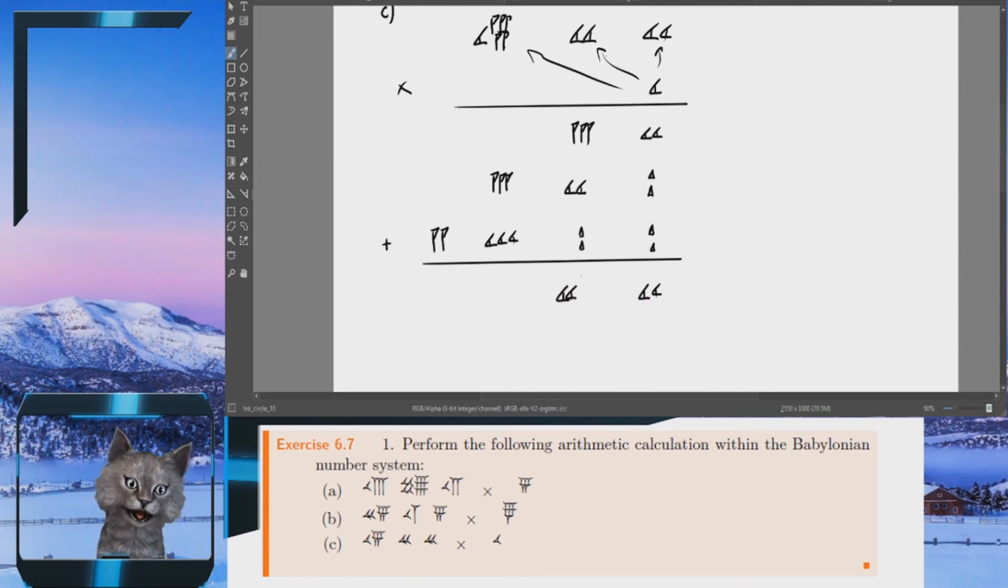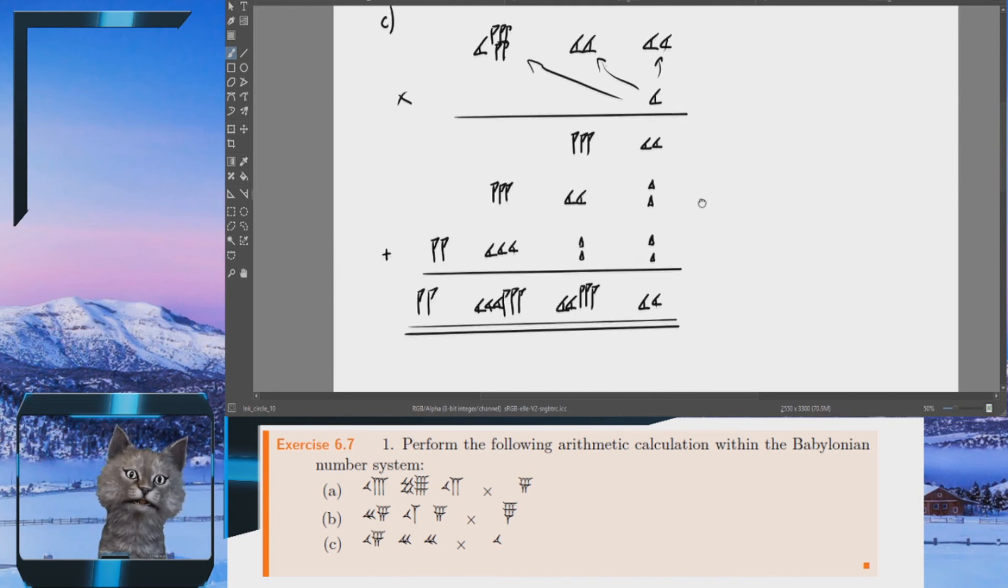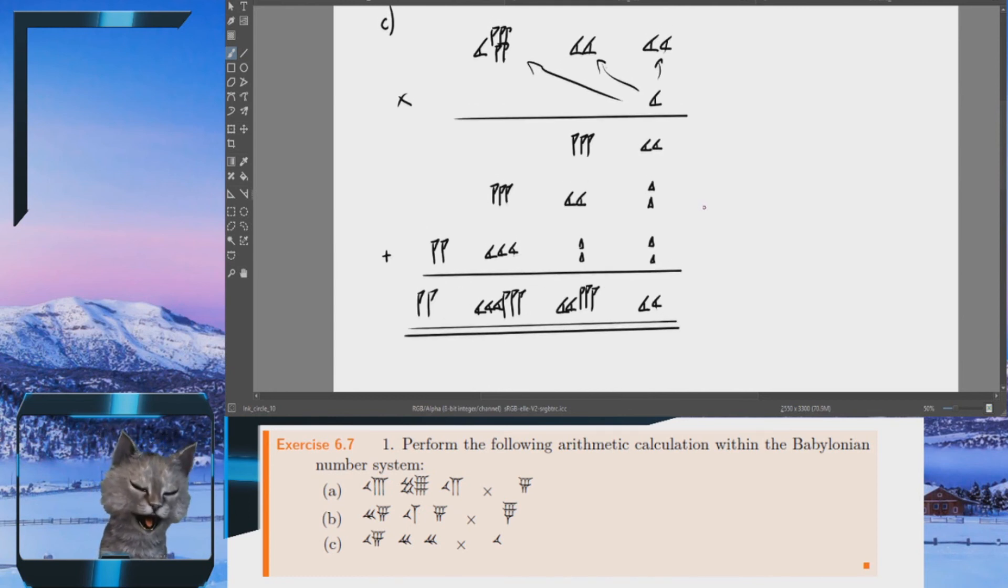Here I get 23. Here I get 33. And here I get a 2. So I'm staying in the Babylonian number system. I don't convert to decimal, then do the multiplication, then convert back. We stay in the number system so we can focus and really highlight the method that we're using. That is all for now. See you next time.